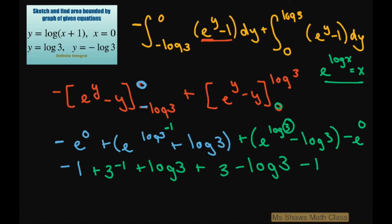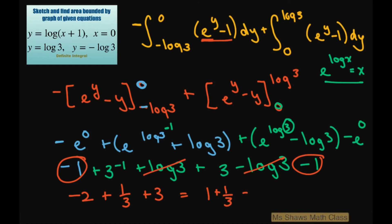Simplifying: the log of 3 terms cancel out. We get negative 2 plus 1/3 plus 3, which gives 1 plus 1/3, equaling 4/3. And that's it. Thank you. Have a nice day. Bye-bye.